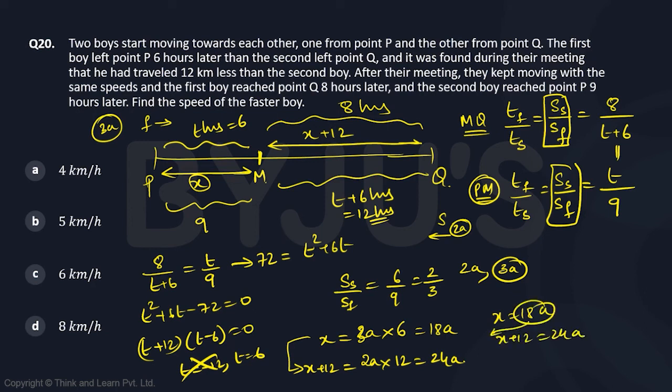So you will get 18a plus 12 is 24a, or you will get 12 equal to 6a, or a equal to 2. If a equal to 2, then 3a is 6. That's your answer.